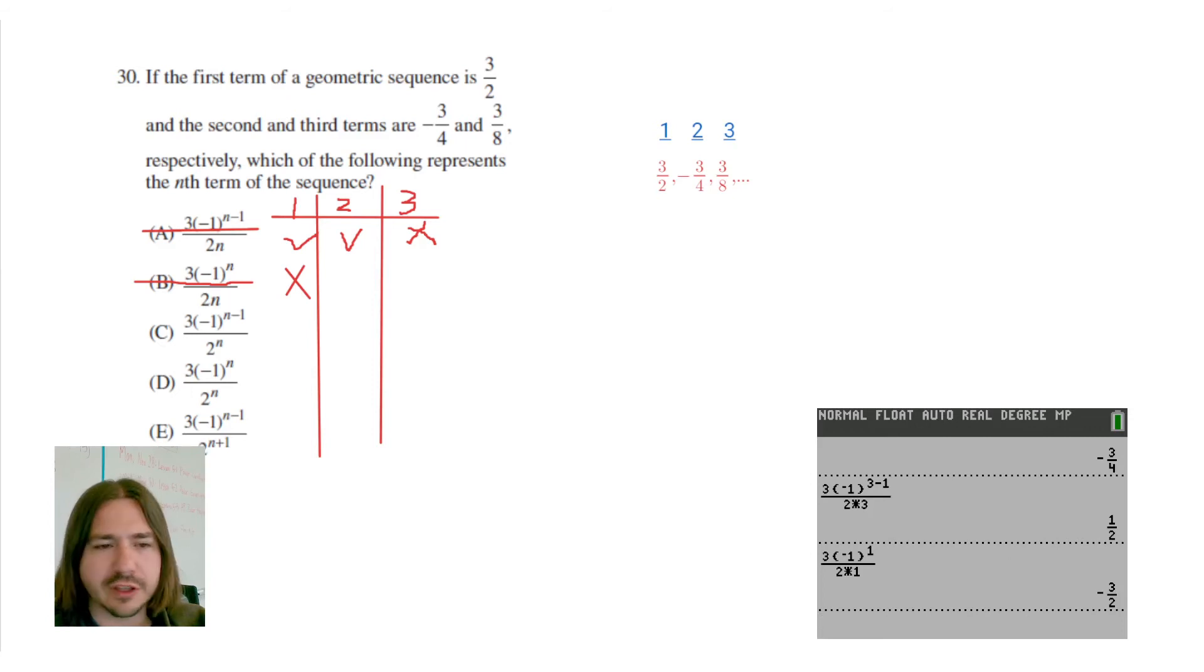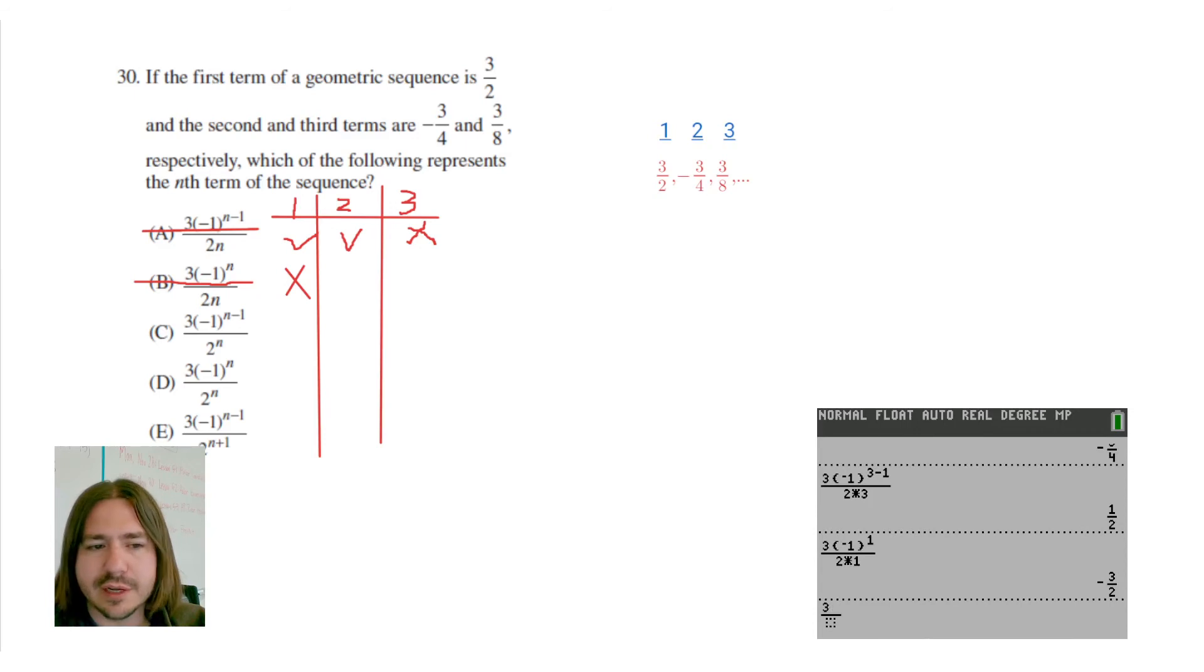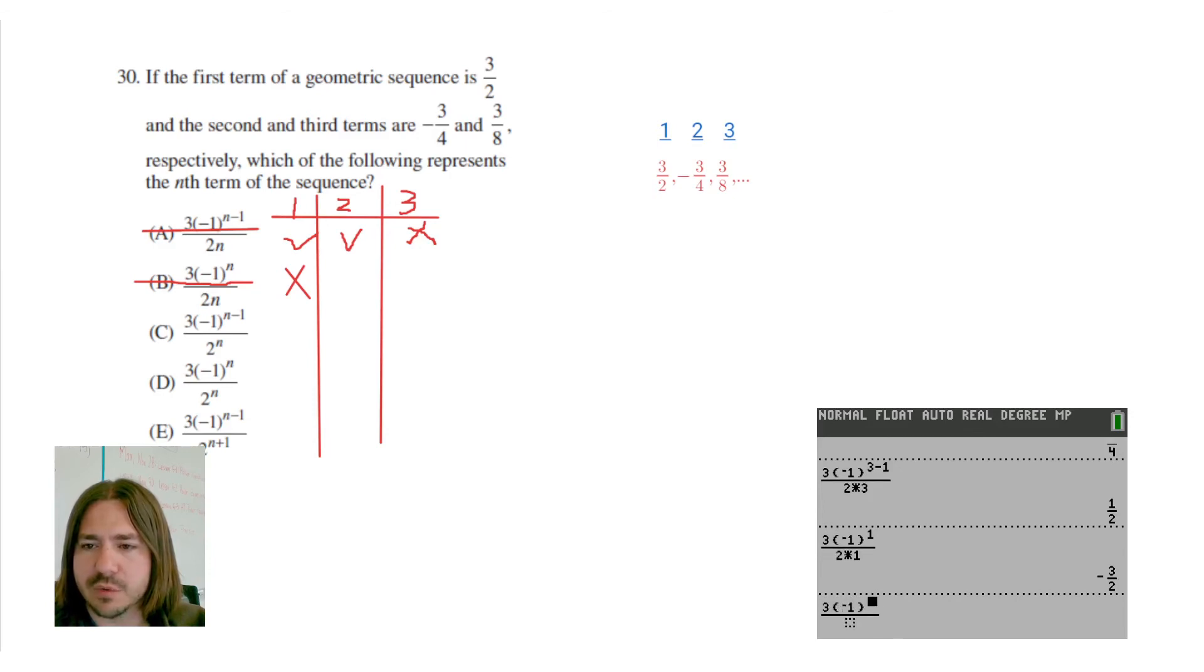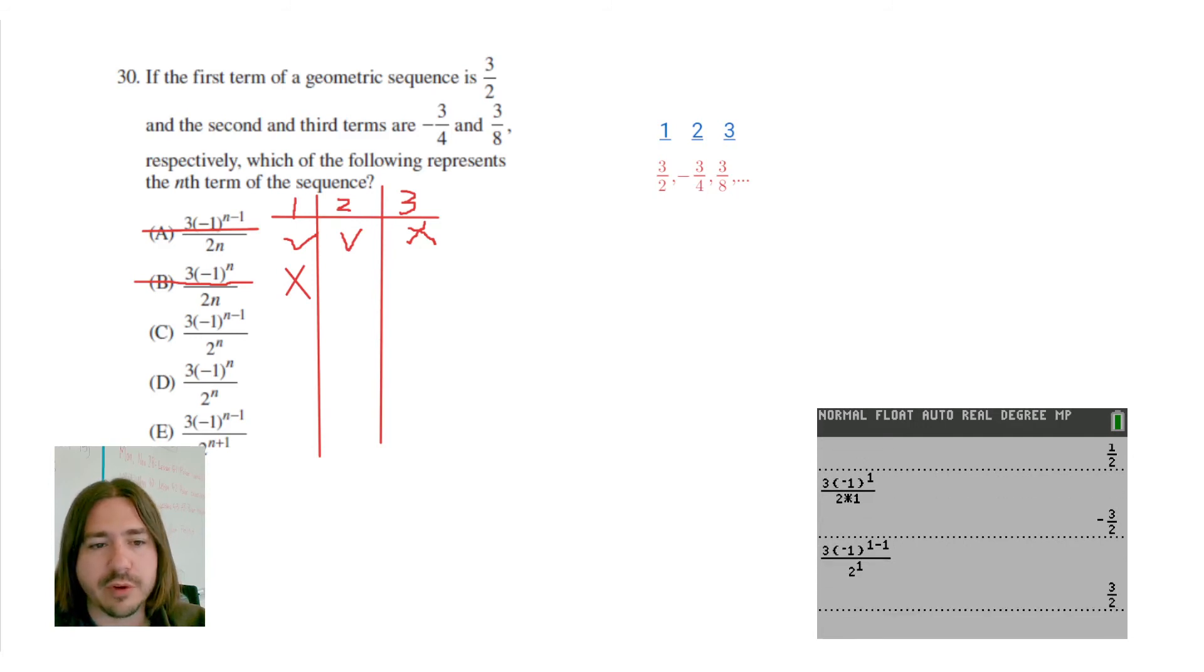This one looks a little bit more like the first. In fact, it's exactly the same as choice A except it says 2 to the n instead of 2 times n. So we've got 3 times negative 1 to the power of n minus 1. So I'm just going to start with 1, 1 minus 1 over 2 to the n. So 2 to the 1. And we get 3 halves. Okay. So that checks out.